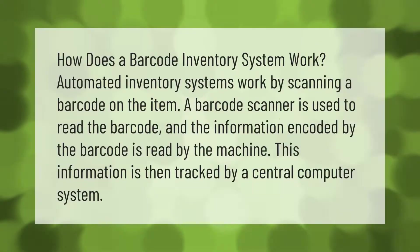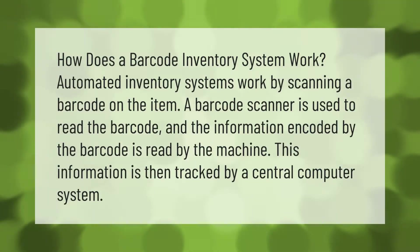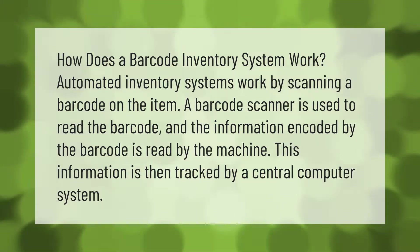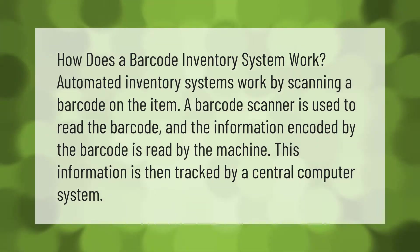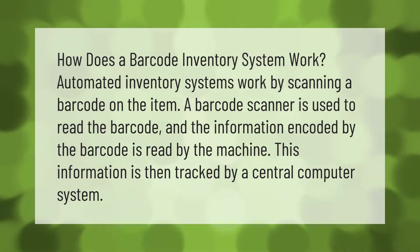How does a barcode inventory system work? Automated inventory systems work by scanning a barcode on the item. A barcode scanner is used to read the barcode, and the information encoded by the barcode is read by the machine. This information is then tracked by a central computer system.